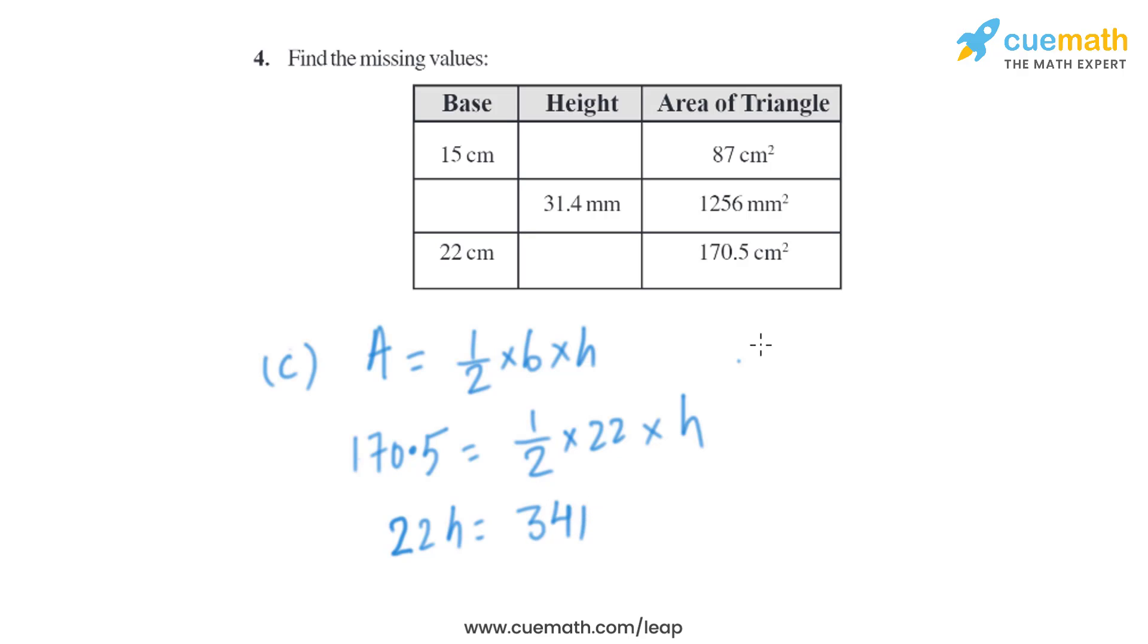Now H will be basically 341 divided by 22, which is same as 15.5 centimeter. So that will be the height of the third part. So this is how we will do this question. This is how we will find the missing values.